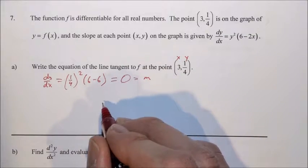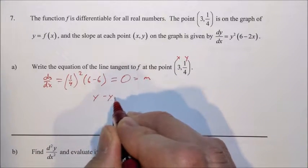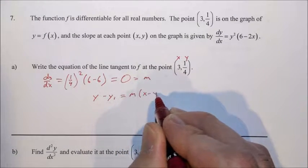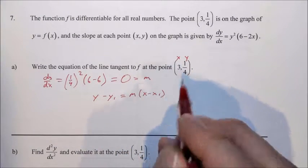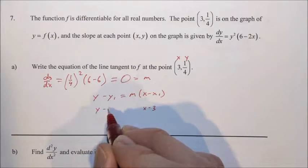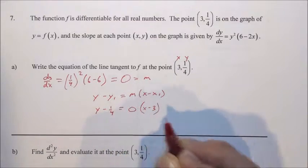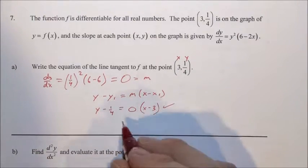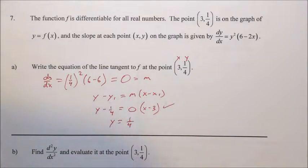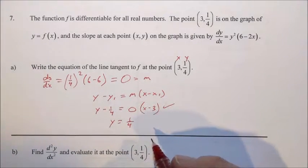So we go to our equation, point-slope form: y minus y1 equals m times x minus x1. x1 is 3, y1 is 1/4, and m is 0. And we're done. And yes, you could write this as y equals 1/4 and get full credit. That's also fine. You don't have to do that last step.